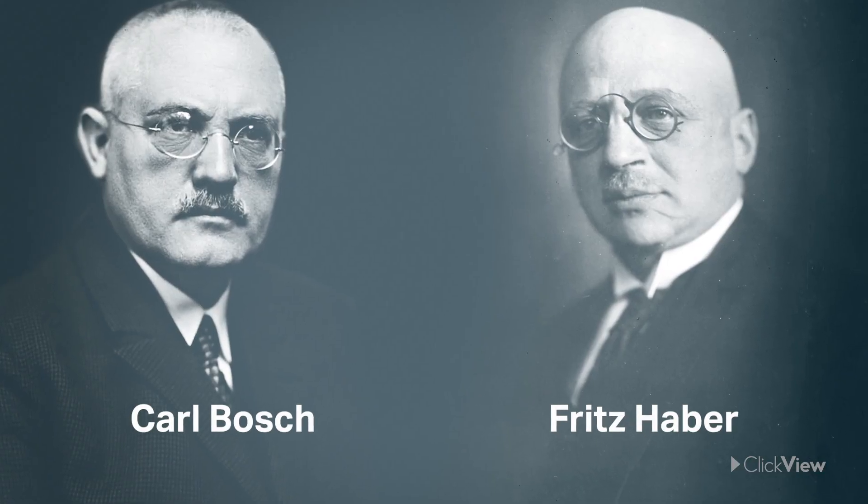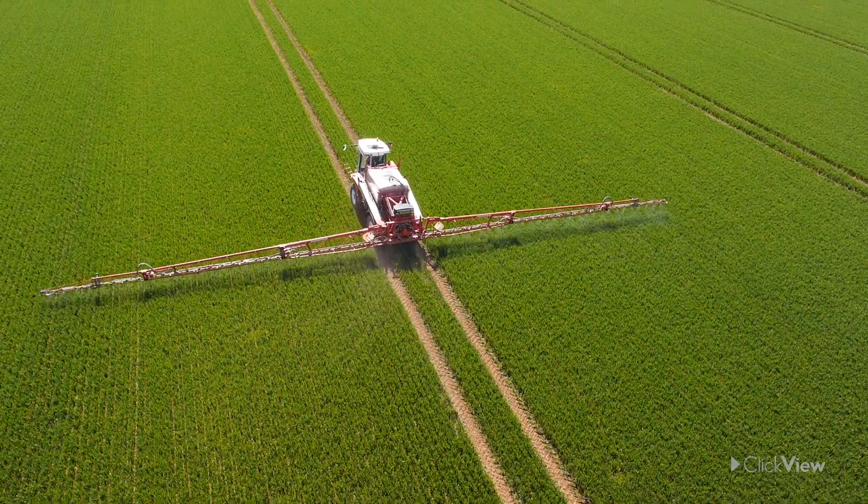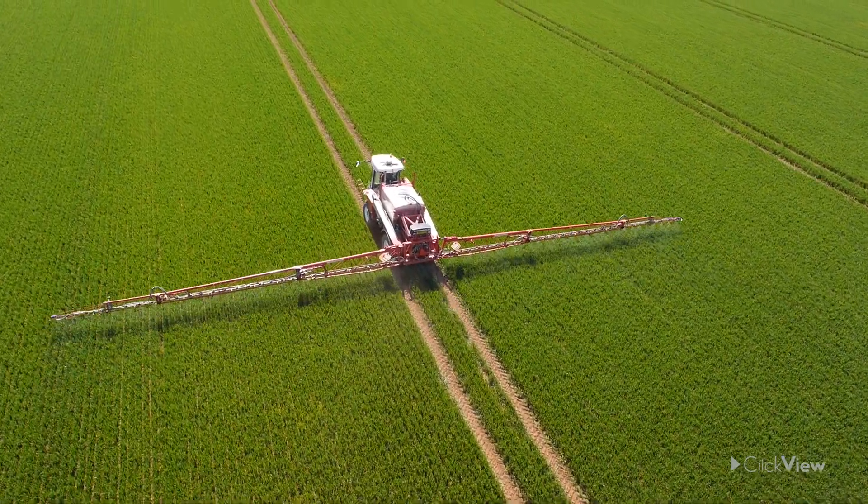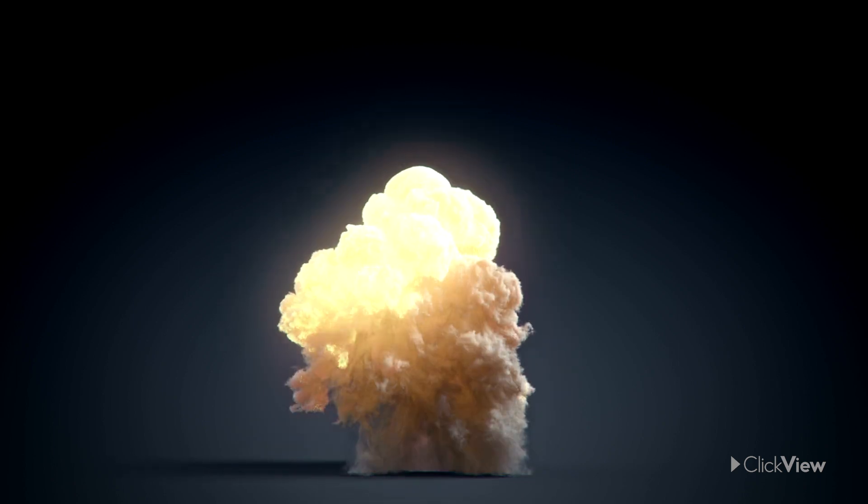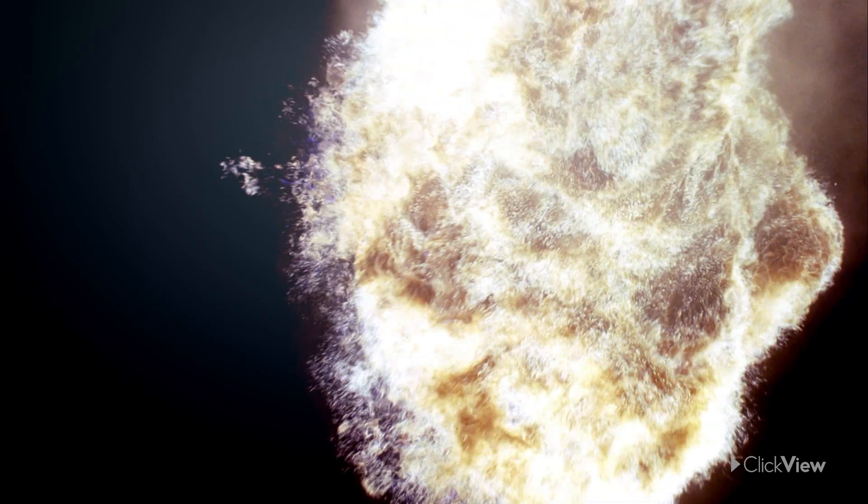Haber's process was scaled up by another chemist named Carl Bosch. The Haber-Bosch process revolutionized not just agriculture, but the weapons industry, with a surplus of new nitrogen-based chemicals. Taming the ammonia equilibrium literally changed our world.